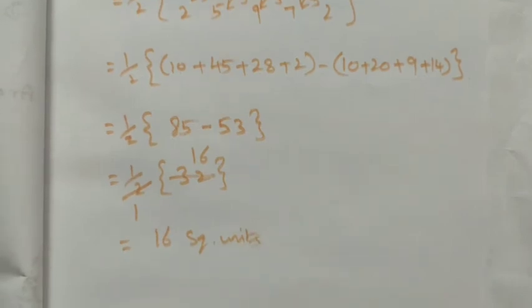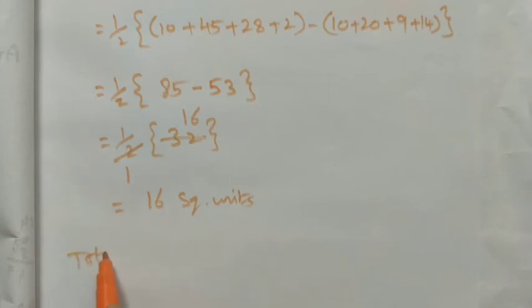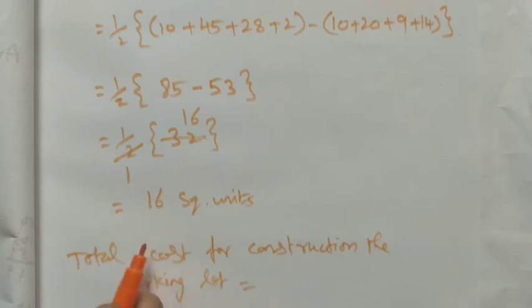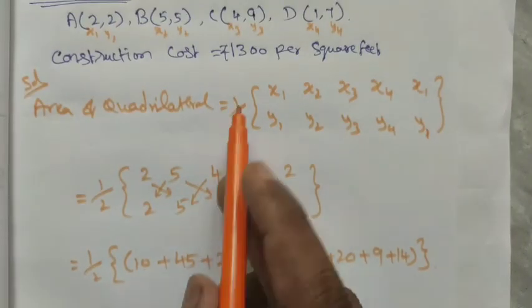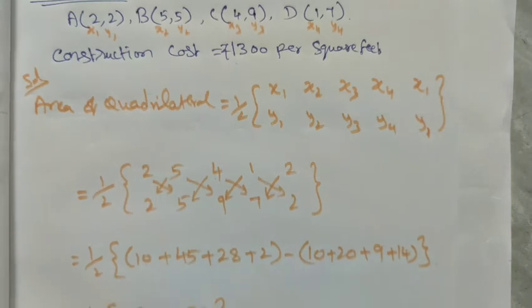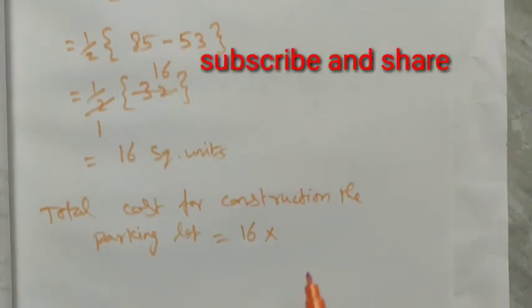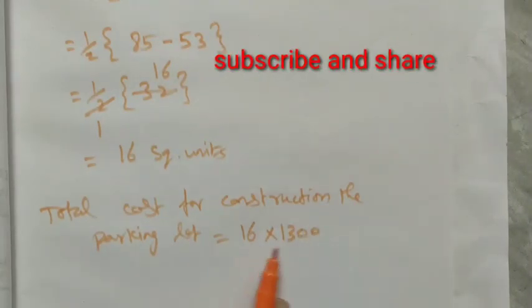Now we want to find the cost of the construction. Total cost for construction, for constructing a parking lot, is equal to here we have total is 16 square units into the cost per square unit, that is 1300. So 16 into 1300, multiply this term.